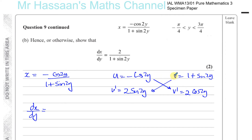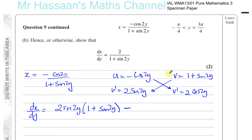With the quotient rule for dx/dy, I always go with V times U dash first. So you're going to have 2 sine 2y times the bracket 1 plus sine 2y, minus these two multiplied — minus times minus gives plus — which will be 2 cosine squared 2y. And I divide it all by V squared, which is 1 plus sine 2y all squared.